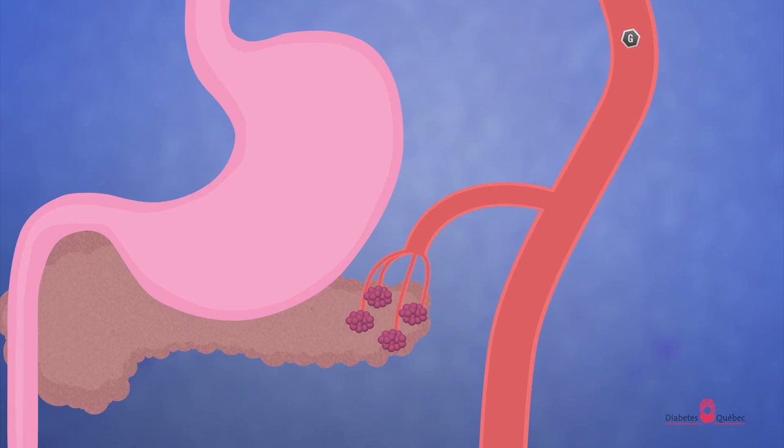We digest the sugars which circulate in the blood in the form of glucose. The presence of glucose in the blood causes the pancreas to produce insulin.